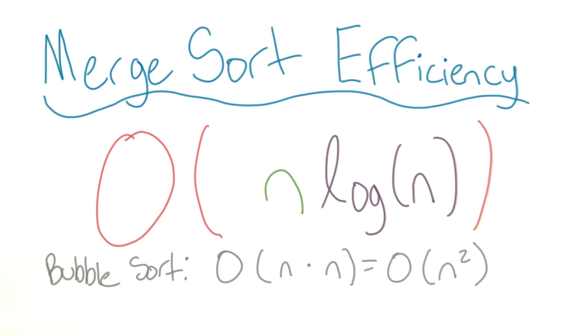In bubble sort, we had n times n, or n squared, as our efficiency. Log n is generally going to be less than n, but it's definitely never going to be greater than n. So we can say that the efficiency of merge sort is better than the efficiency of bubble sort.